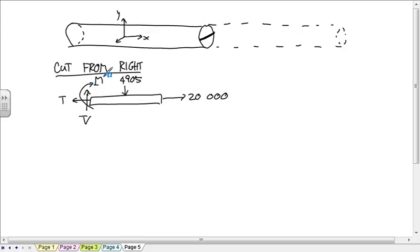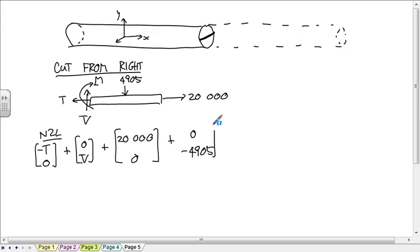And we don't have to worry about calculating that bending moment because we know that there's not going to be any normal stress due to bending moment on that line. Newton's second law says negative T plus 0V plus 20,000 plus 0, negative 4905 is equal to 0.